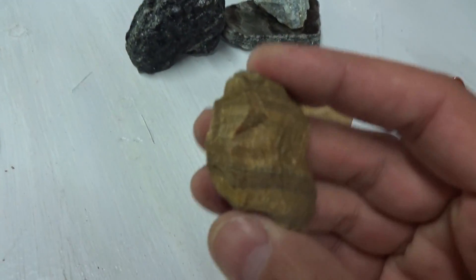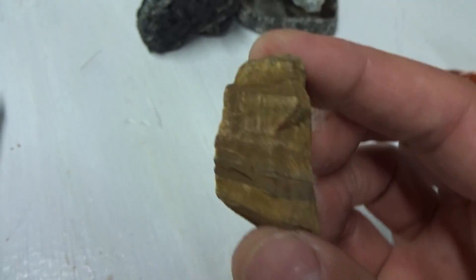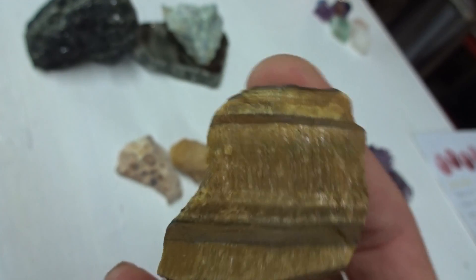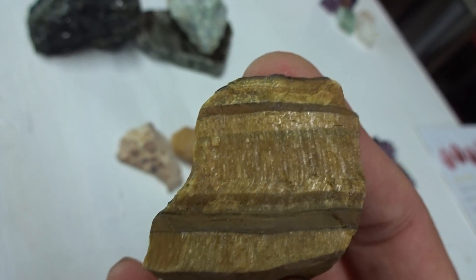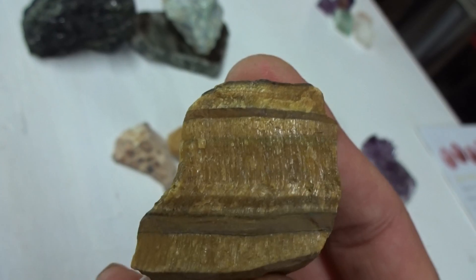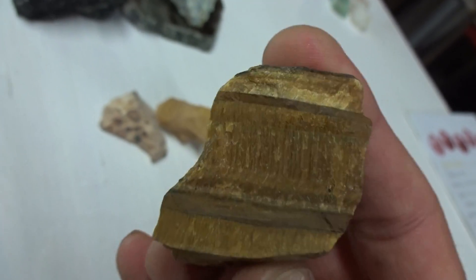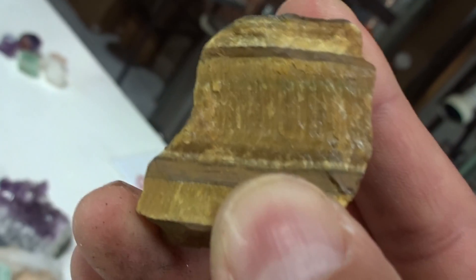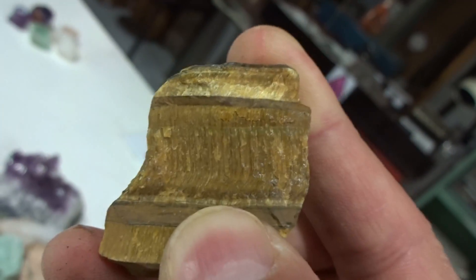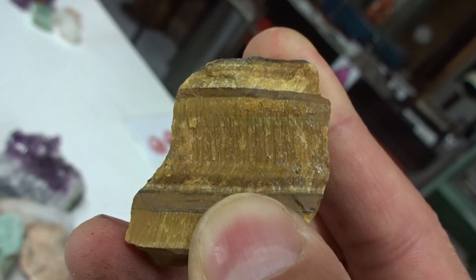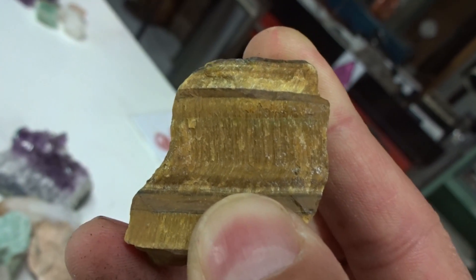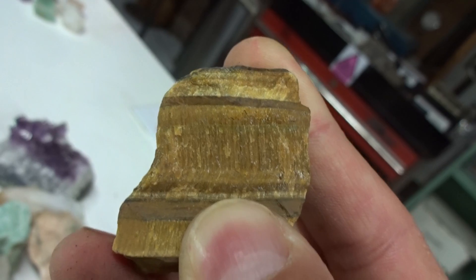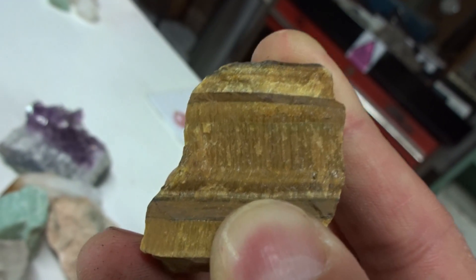This is tiger eye, another silicate. Tiger eye has chatoyancy or chatoyancy to it made up of asbestos fibers. The type of asbestos which is a natural mineral is chrysotile.